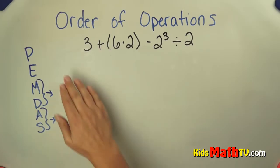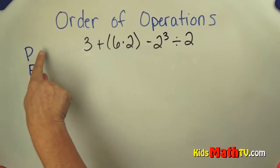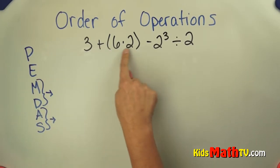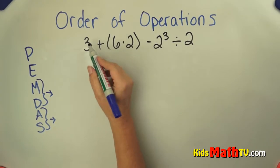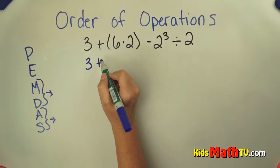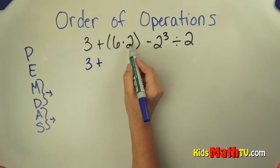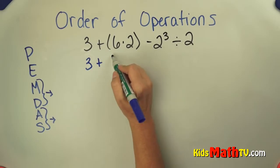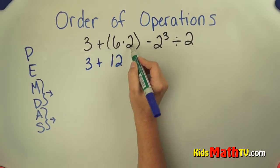So I'm going to go in order of operations. First I look for parentheses, and I see I have them. My next step in the expression is 3 plus - I'm not doing anything with that - but I'm going to do 6 times 2, which is 12. I've evaluated the parentheses.